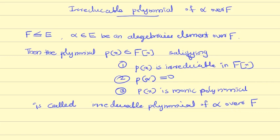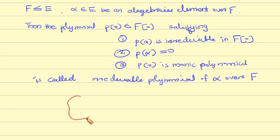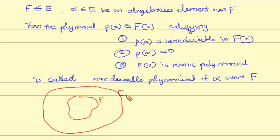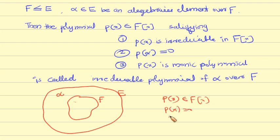Let me explain this. F and E are fields. F is a field, E is an extension field, and alpha is an element of E. Given this setup, we need to find a polynomial p(x) in E — we will choose that polynomial.